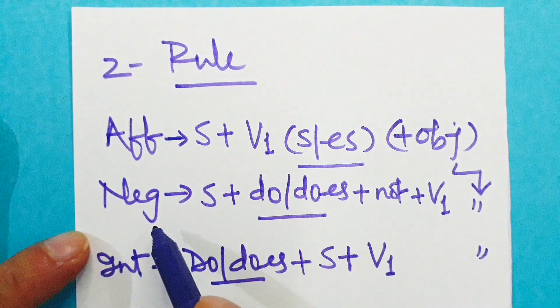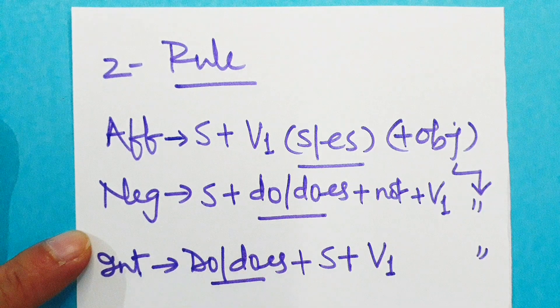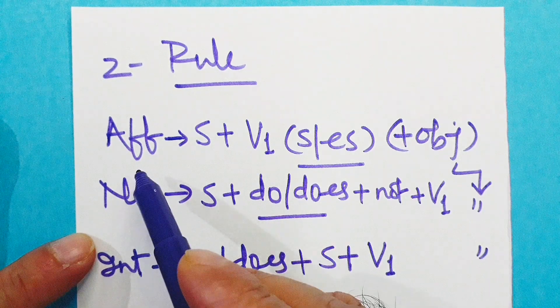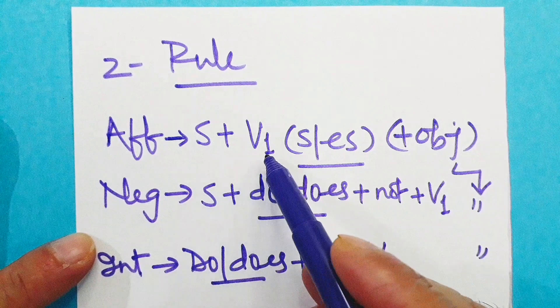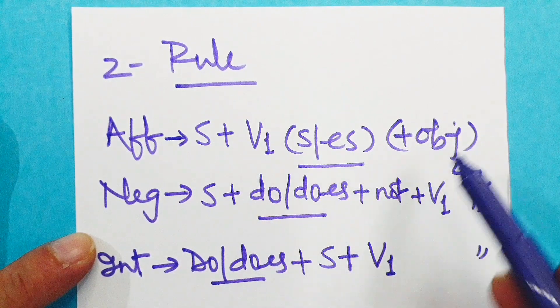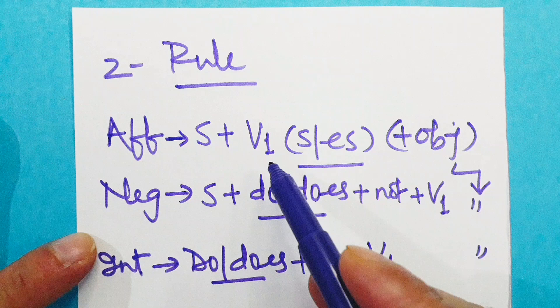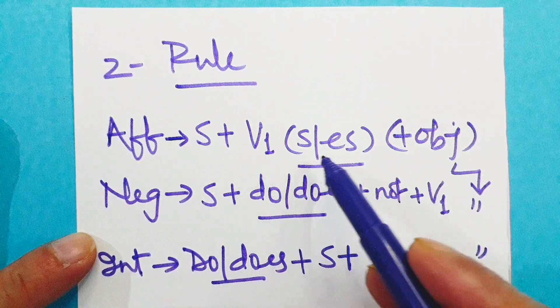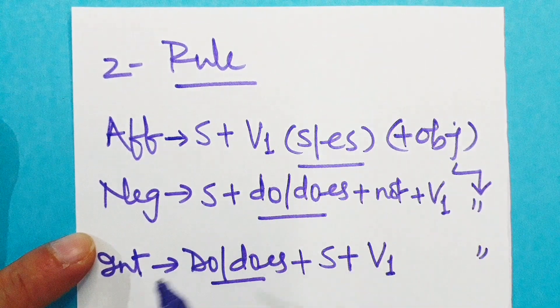Affirmative, negative, interrogative, and interrogative-negative. First affirmative: the rule is S plus V1, S or ES plus object if any. S is subject, V1 is verb's first form, S or ES to be or not to be we have to decide, then object if any.